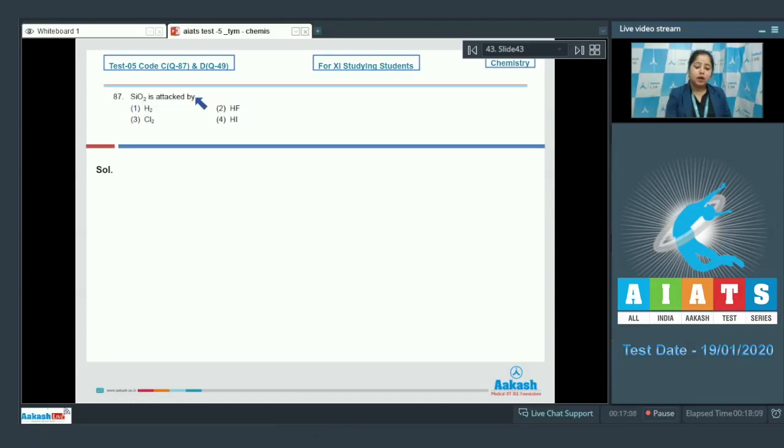Moving to the next question, SiO2 is attacked by H2, HF, Cl2, or HI? For this question, you need to know that silica is resistant to halogens and dihydrogens and it is attacked by HF.